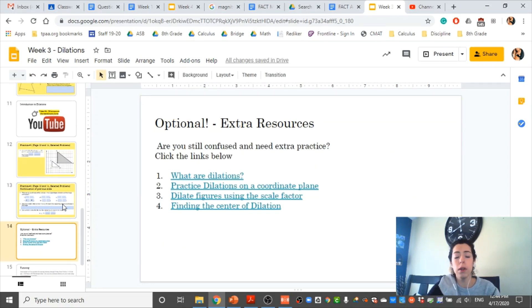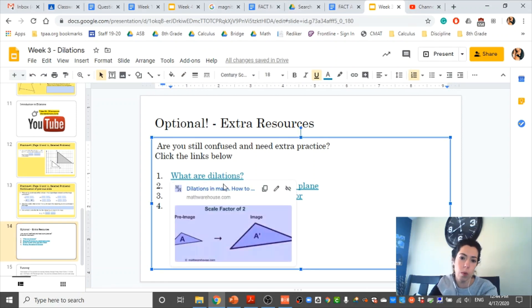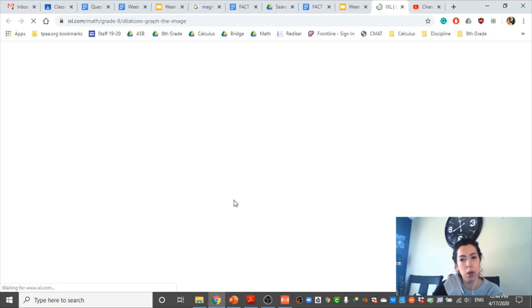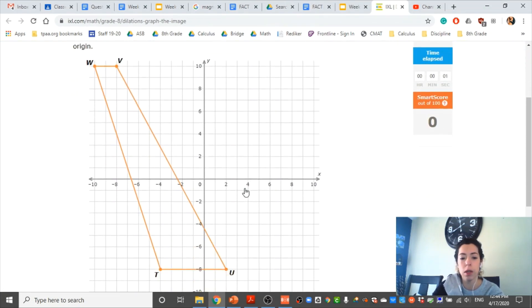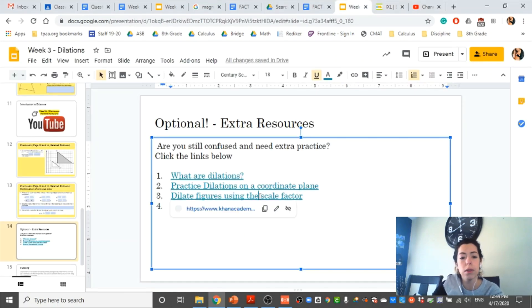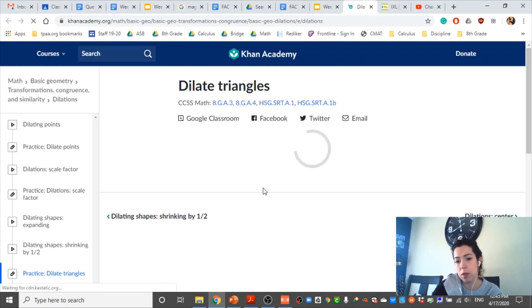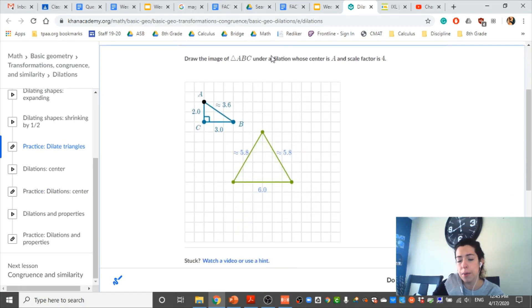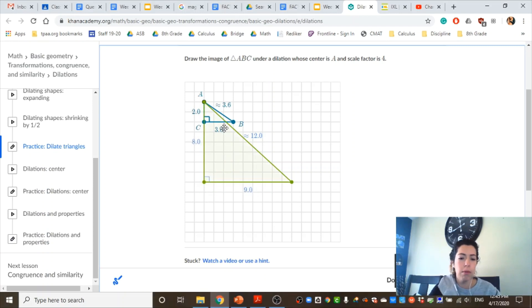If you feel like you need more help, there are a few links here with extra resources. If you like reading more than watching a video, you can go to this file called What Are Dilations. This is a practice on coordinate plane that will give you automatic feedback. Remember that there will be an assessment in two weeks. You can dilate, this is a Khan Academy practice where you can dilate triangles. In this case, it says under a dilation whose center is A and the scale factor is 4. So this is the center. I'm making this 4 times bigger, so now it's going to be 8. If I'm making this 4 times bigger, it was 3, has to be 12 now.